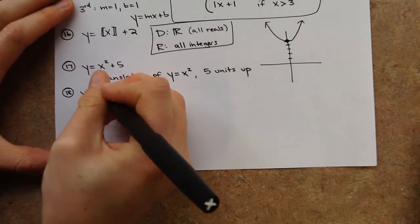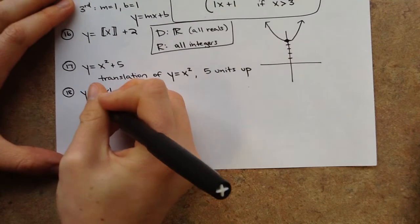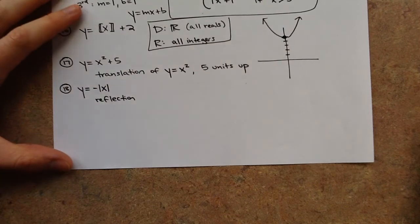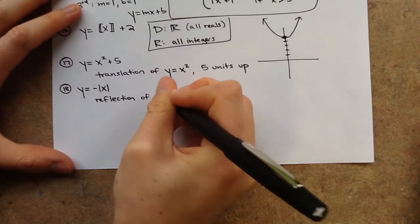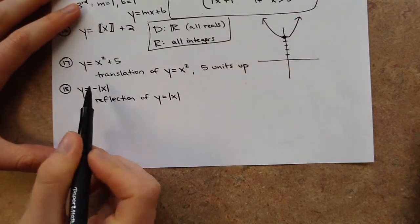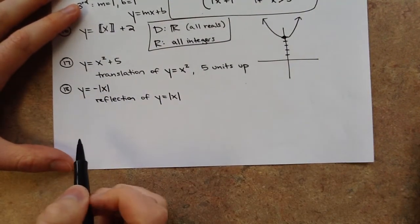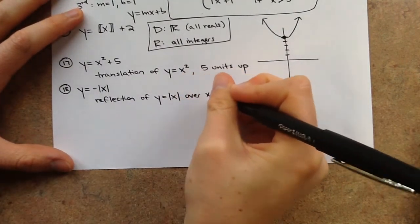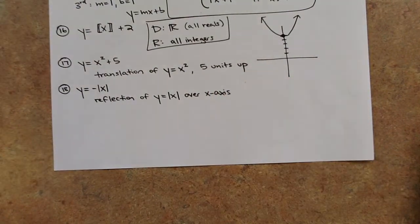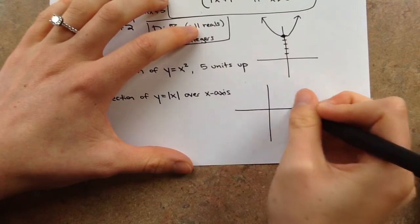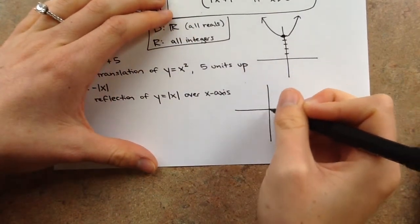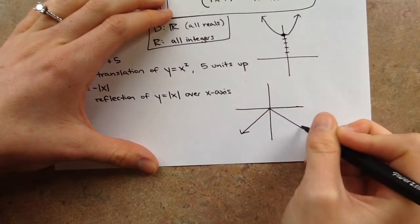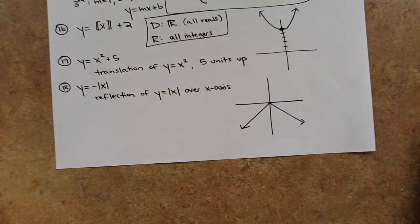Number 18: y equals the negative absolute value of x. This is a reflection of y equals the absolute value of x. Because the negative is on the outside, it flips over the x-axis. If the negative were inside, it would flip over the y-axis. When the absolute value is flipped over the x-axis, it looks like an upside-down V.